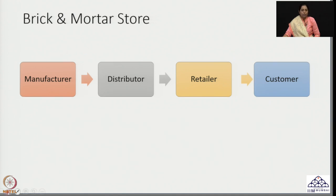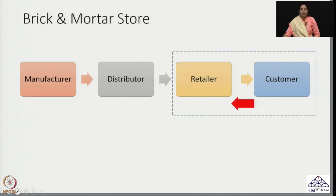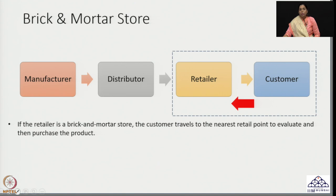When we consider a brick and mortar concept, the customer actually moves to the location of the retailer — it could be the nearest retailer or a retail point of interest to the customer. For example, if you want to purchase regular grocery items, you would go to the nearest local Kirana store near your house. This decision takes into consideration how far you have to travel.